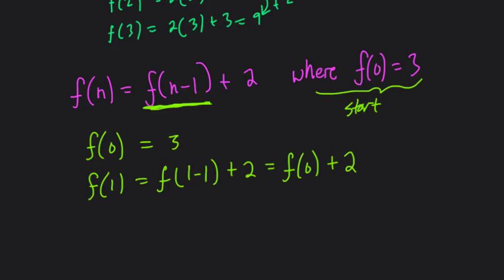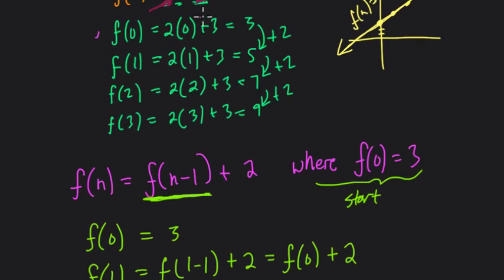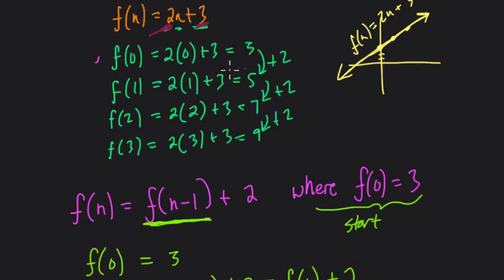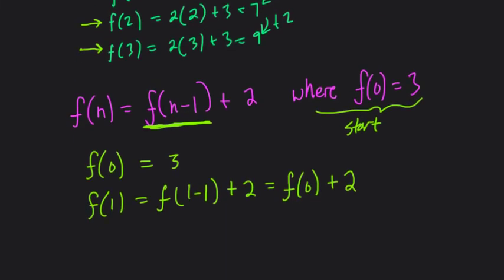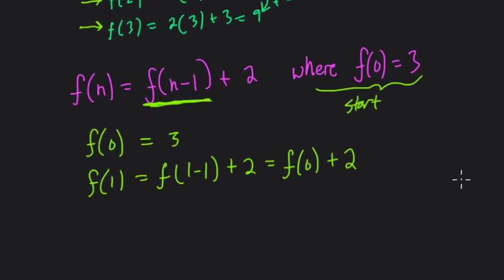Notice how different that is from our other function, right? f(n) equals 2n plus 3. To find f(3), for example, we didn't have to know what f(2) was and then add 2 to it. To find f(3), we just plug 3 right into this function right here. So that's not recursive. Recursive would mean to find f(3), we first find f(2) and then add to it. Now why would we do this? Well, it turns out some functions are recursive. It's just naturally the way they appear, so we have to deal with that. And it opens the door to some really wonderful mathematics.